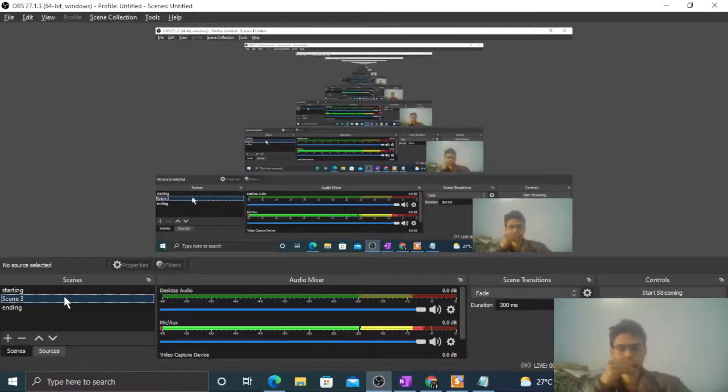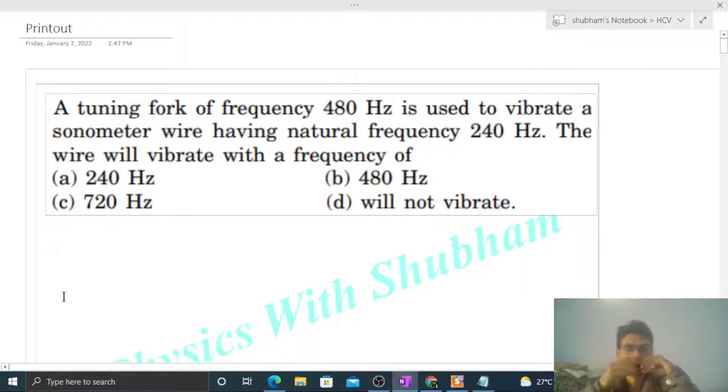Hi everyone, today let's discuss an interesting problem. A tuning fork of frequency 480 Hz is used to vibrate a sonometer wire having natural frequency 240 Hz. The wire will vibrate with a frequency of...